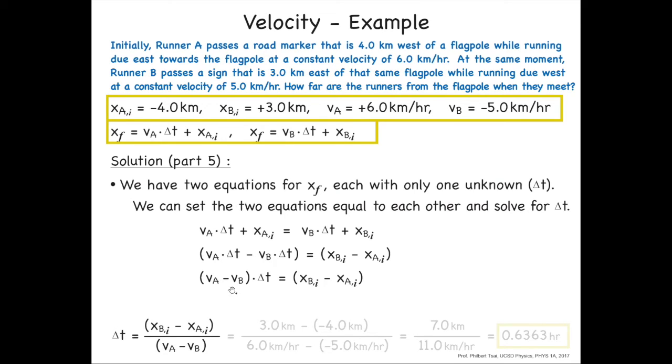And that finally gives us delta t is just this quantity divided by this quantity. But all of these variables are known. So we have initial position of runner B minus the initial position of runner A. So that's 3 minus minus 4. And then the velocity of runner A minus the velocity of runner B. And we know that runner B has a negative velocity, so that comes in with a negative sign, which gives us 3 minus minus 4 is 3 plus 4 is 7. 6 minus minus 5, same as 6 plus 5, that's 11. So that's 7 over 11. Notice the units cancel properly. It's about two-thirds of an hour, 0.636 hours.